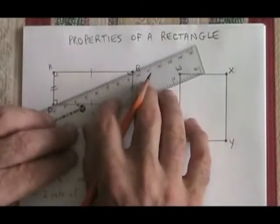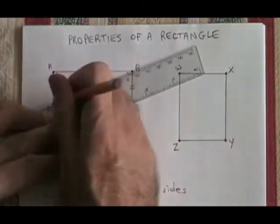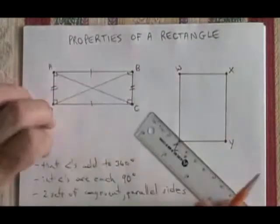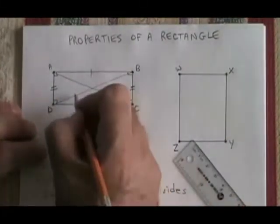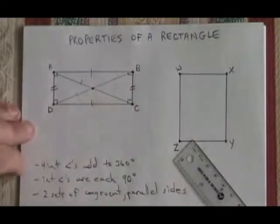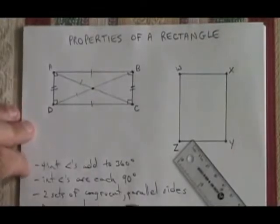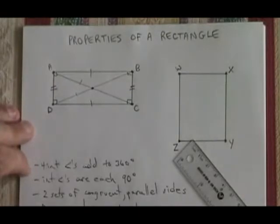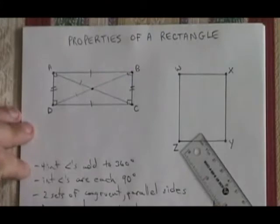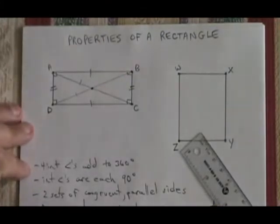The diagonals of the rectangle, which I will draw now, are not perpendicular, but they are congruent, and they intersect at the midpoints. So this is a midpoint. Diagonals are not perpendicular, but they are congruent, and intersect at their midpoints.